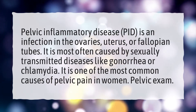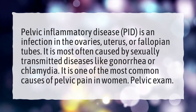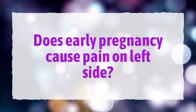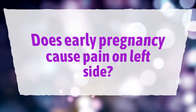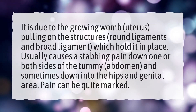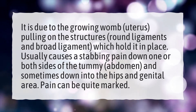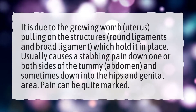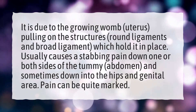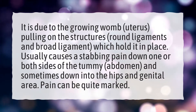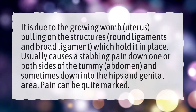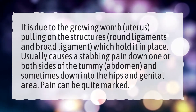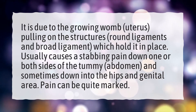Pelvic Exam. Does early pregnancy cause pain on left side? It is due to the growing womb, or uterus, pulling on the structures — round ligaments and broad ligament — which hold it in place. It usually causes a stabbing pain down one or both sides of the tummy, abdomen, and sometimes down into the hips and genital area. The pain can be quite marked.